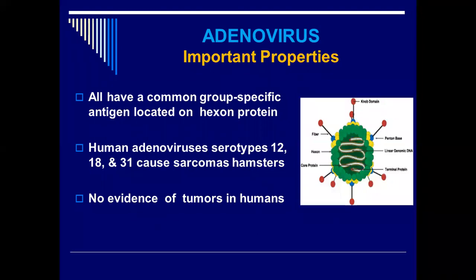The human adenoviruses serotypes 12, 18, and 31 cause sarcoma in hamsters. It does not cause sarcoma in humans, but it has been seen in laboratory animals. There is no evidence of tumors in humans. So based on the fiber of the adenovirus, serotypes 12, 18, and 31 are not associated with any type of cancer in humans — they have only given cancer or sarcoma in laboratory animals like hamsters.